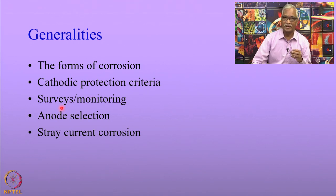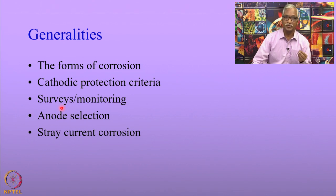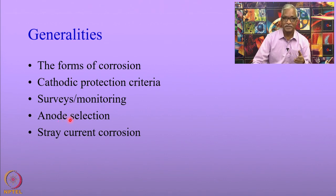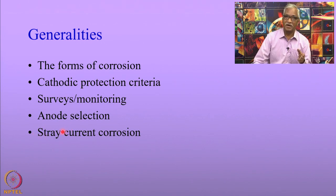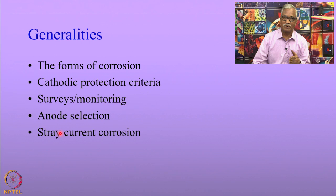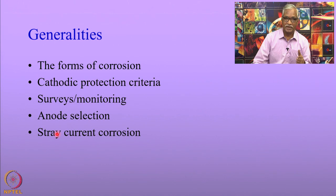The surveys in relation to soil resistivity, pipe-soil, the current requirement, and even stray current corrosion are all applicable to storage tanks. The anode selection criteria and the way you calculate ground resistance is very much similar to how it is done for pipelines. The storage tanks also suffer from stray current corrosion, because current strays from the anodes of the cathodic protection systems to other structures and then returns back to the storage tanks. These are generalities which we will not be discussing in detail in this lecture.